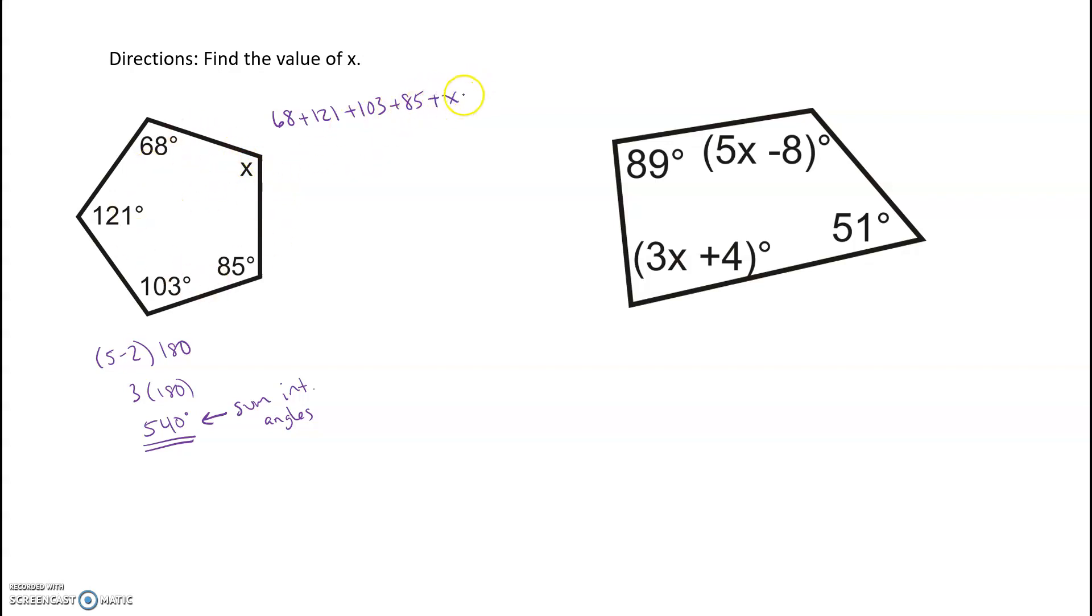All these angles should add up to equal 540 degrees. Sometimes you have to find out, and we did this with triangles. It was just a little bit easier because we knew every triangle added up to 180. Let's go ahead and combine our like terms, so we have 68 plus 121 plus 103 plus 85. We have 377 plus x equals 540.